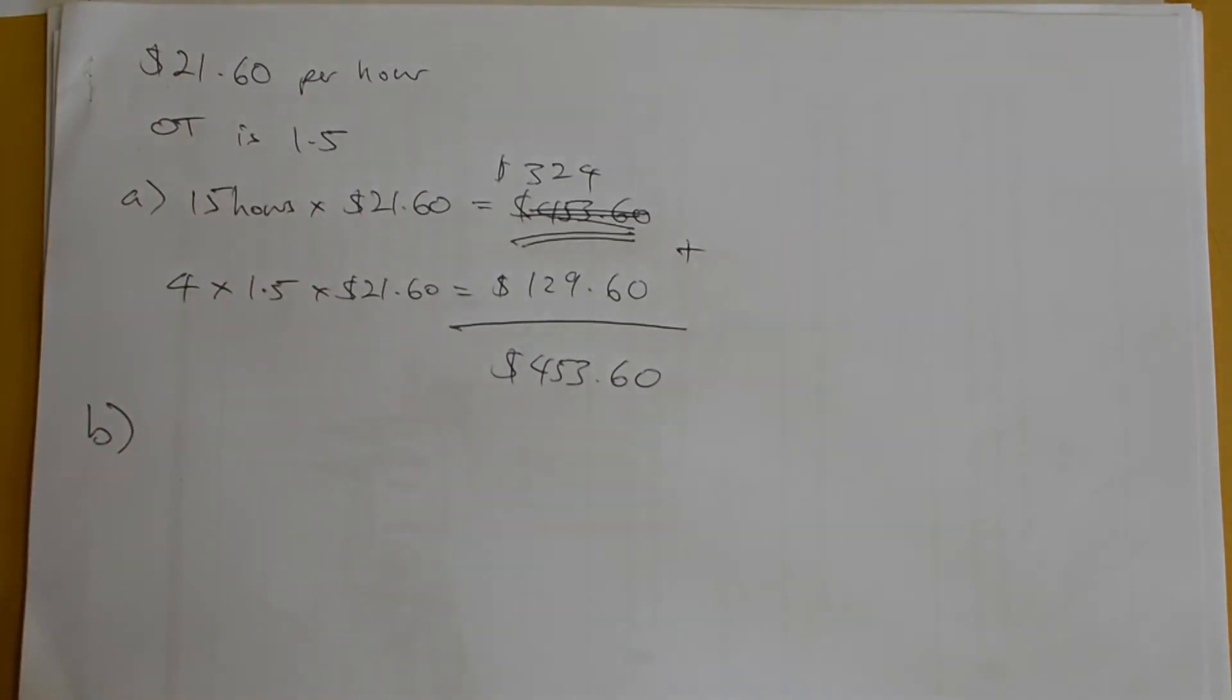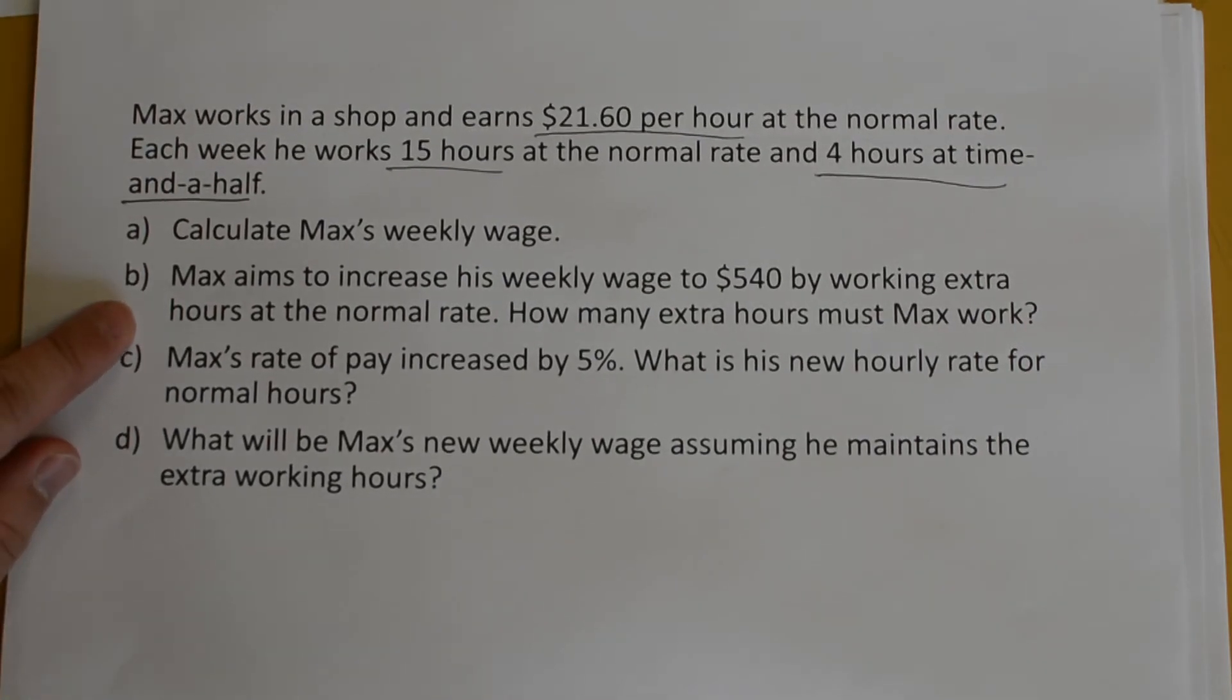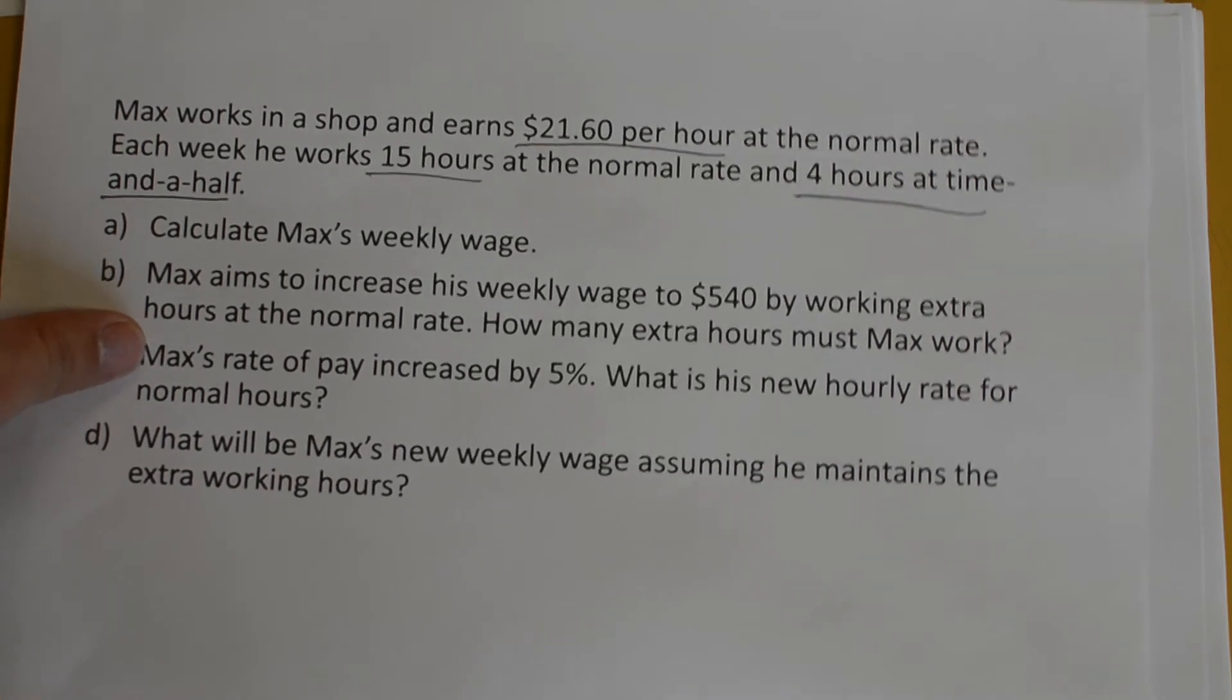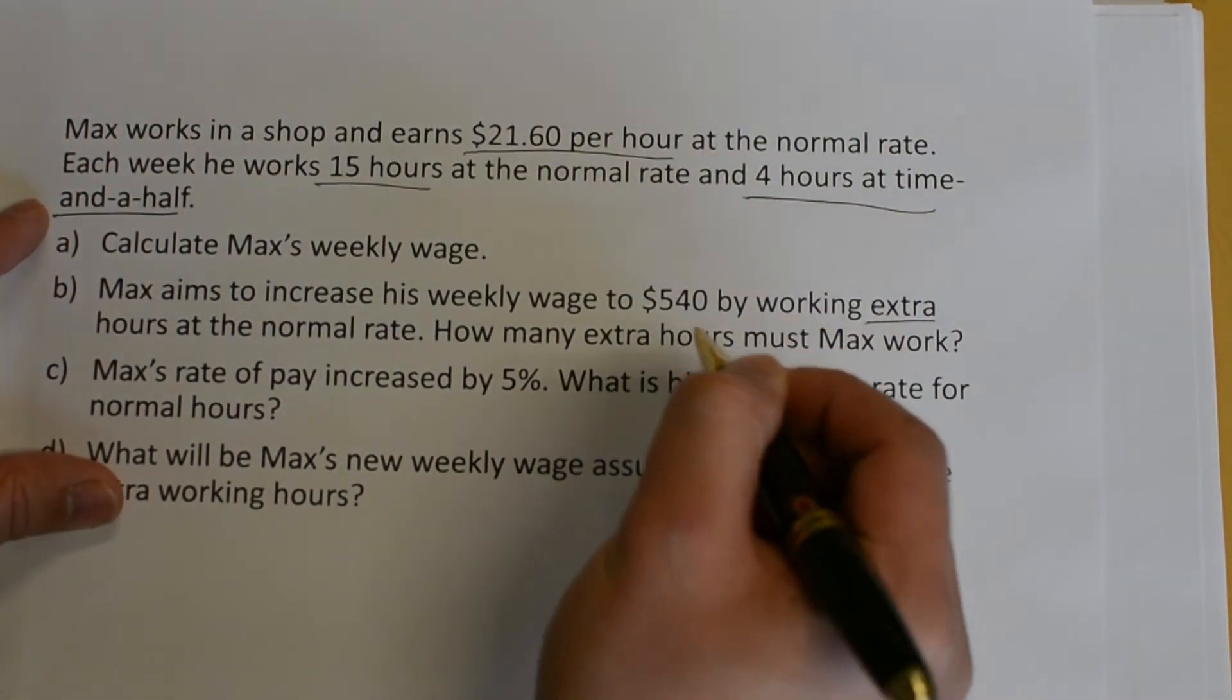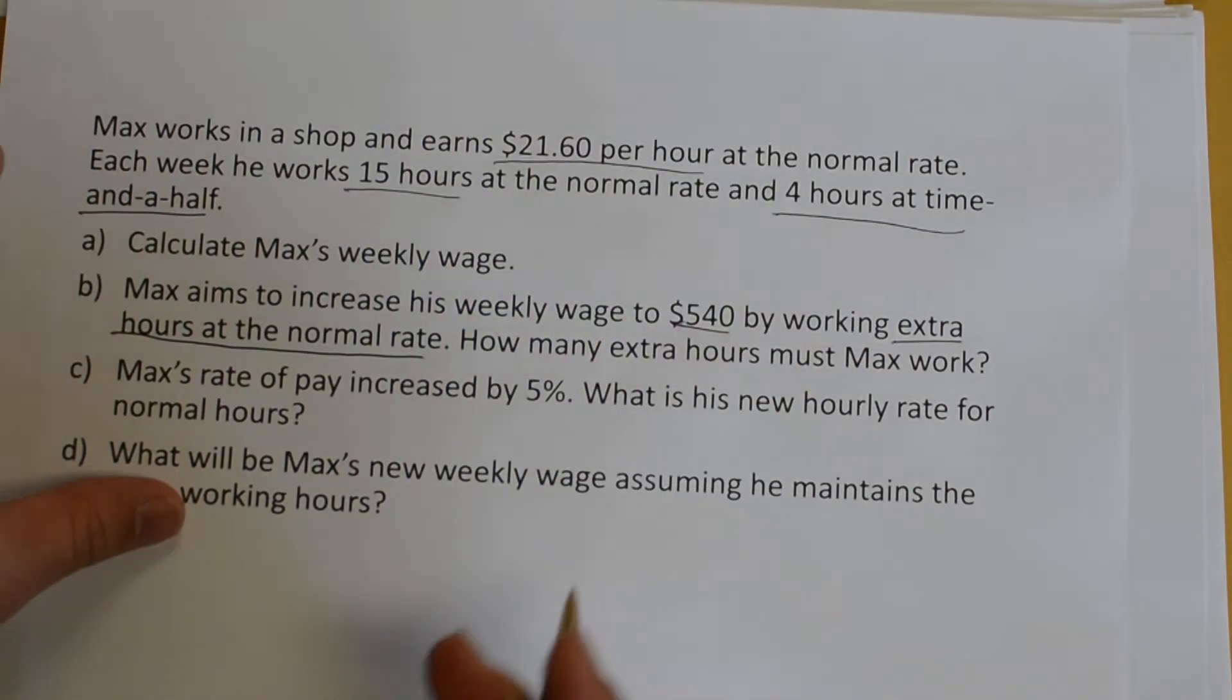Moving on to part B. He aims to increase his weekly wage to $540 by working extra hours at the normal rate. How many extra hours must Max work? The key word here was extra hours at the normal rate, and he wants to earn $540.